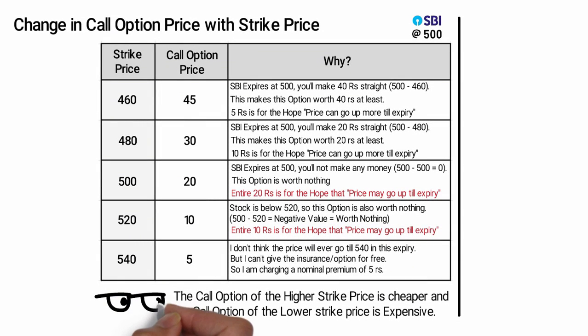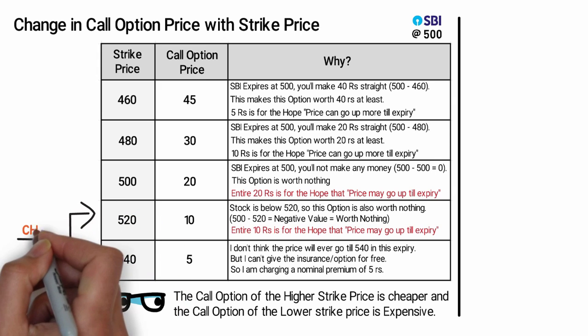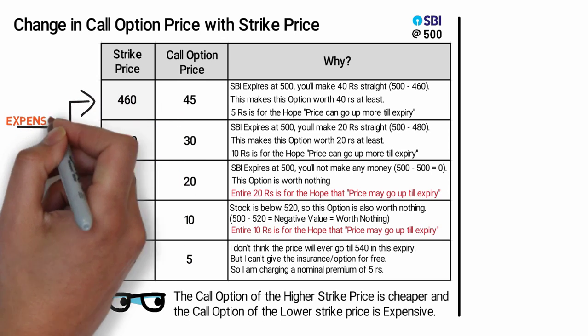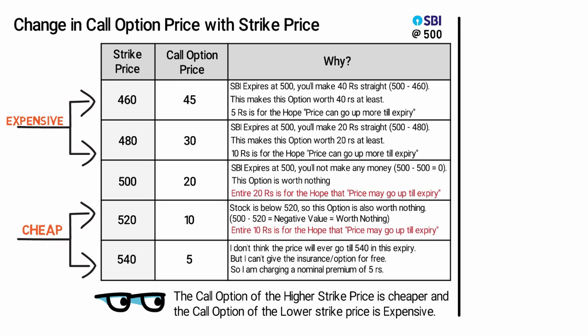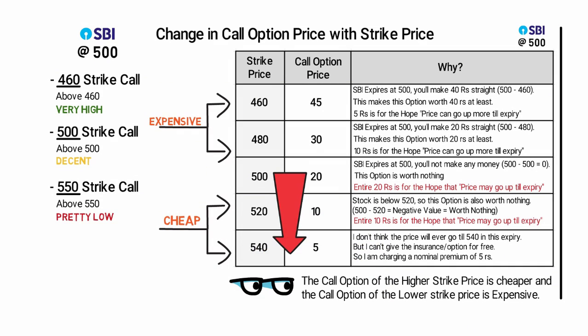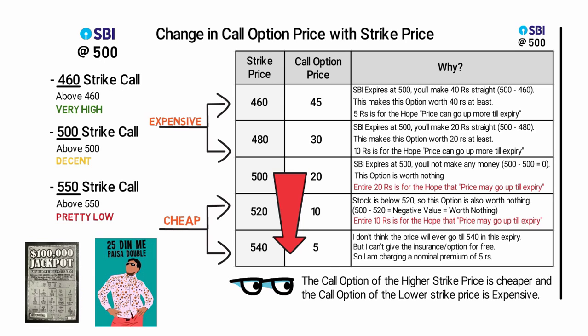Look at the table and remember this phrase: the call option of a higher strike price is cheaper, and the call option of a lower strike price is expensive. As we move from 500 to 540, option buyers are less likely to make money — this explains why it is so cheap. That's why the far-away options are called lottery tickets. Like lottery tickets, option buyers buy these cheap options to win big in the market. And we know what usually happens to lotteries.